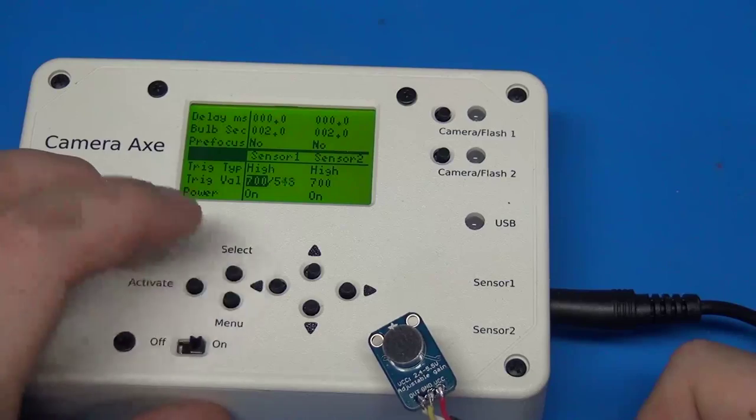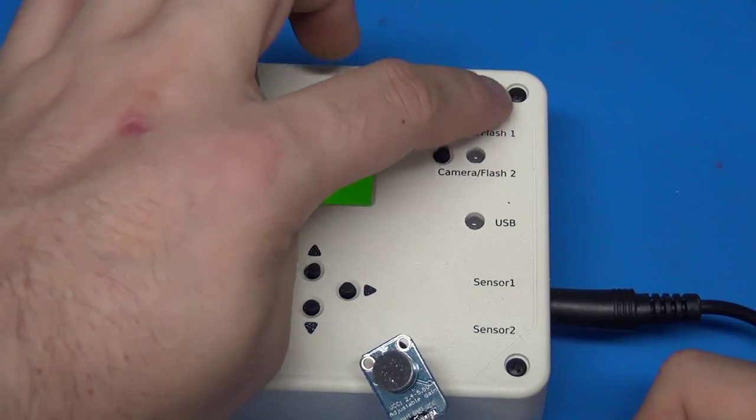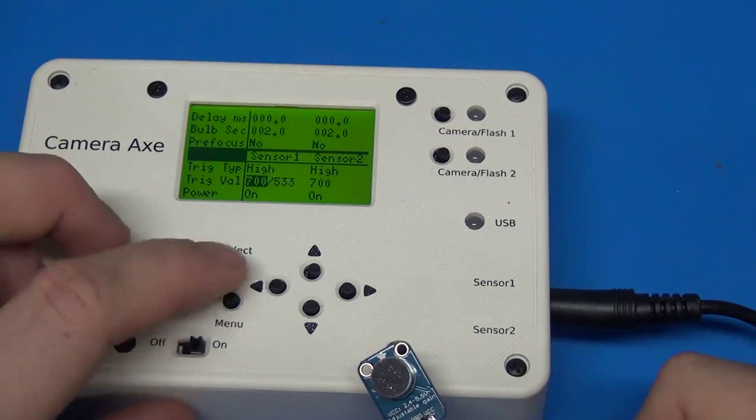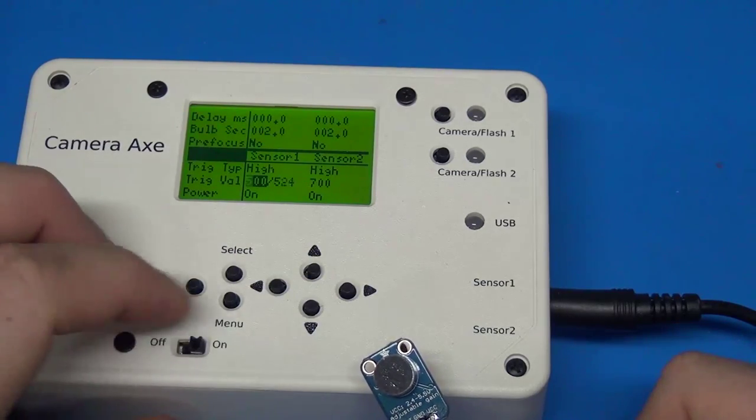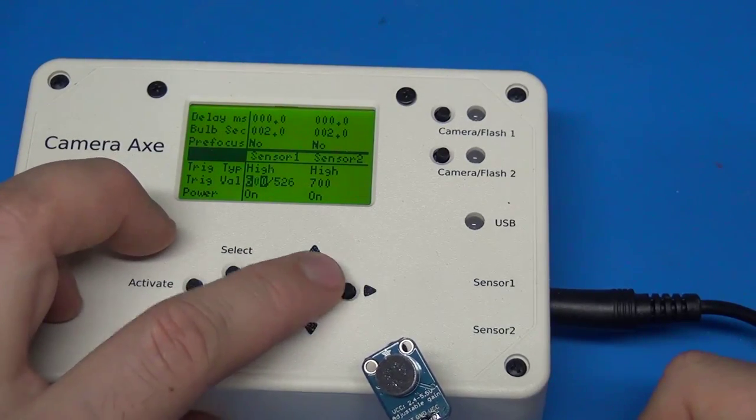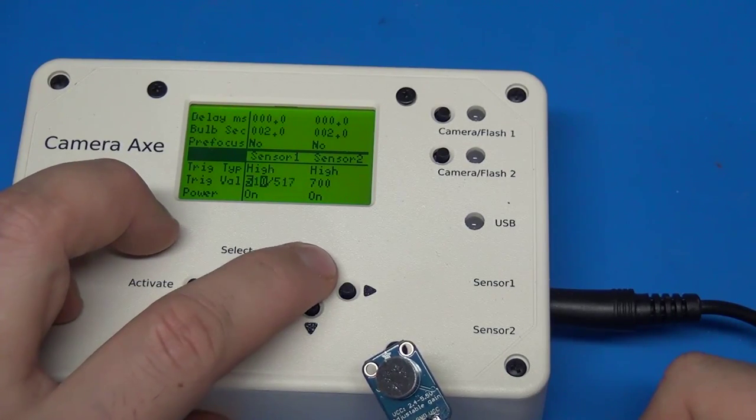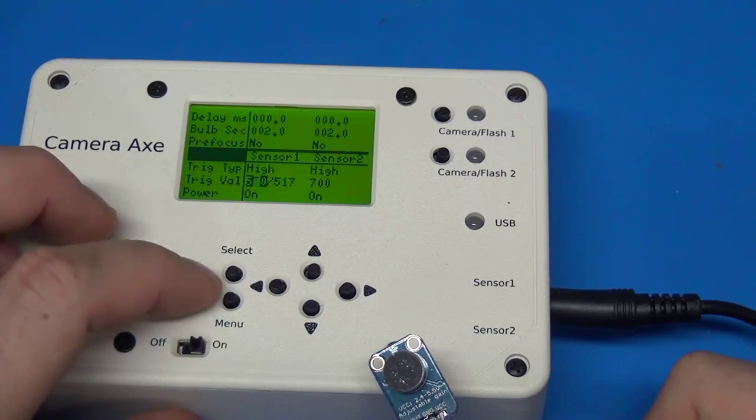If you wanted to use this with the CameraX to actually trigger a camera or flash that's plugged into camera sensor port number 1 - I've got a video that goes into more depth on using the sound sensor, but we'll just quickly set something up here. We'll set the trigger to, let's say, 550 and activate that.